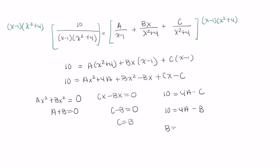This means that B is equal to 4A minus 10, which I'm now going to pop into here in place of this B. So A plus 4A minus 10 is equal to 0, so 5A is equal to 10, which means A is equal to 2.